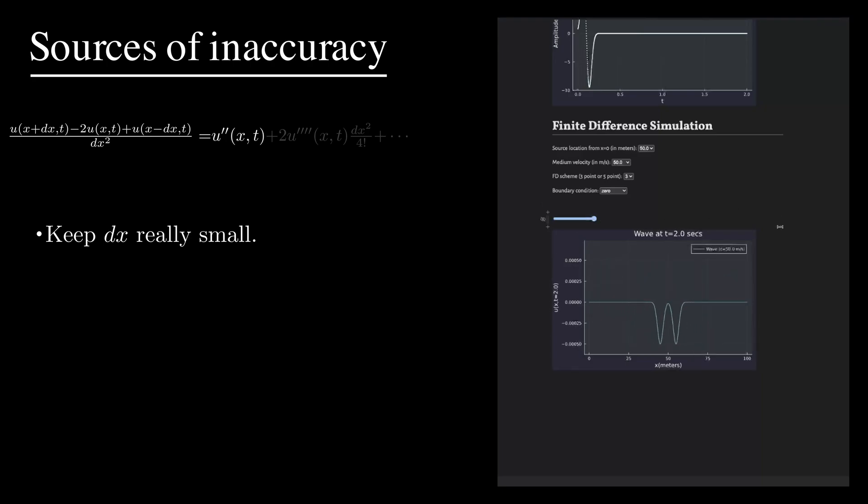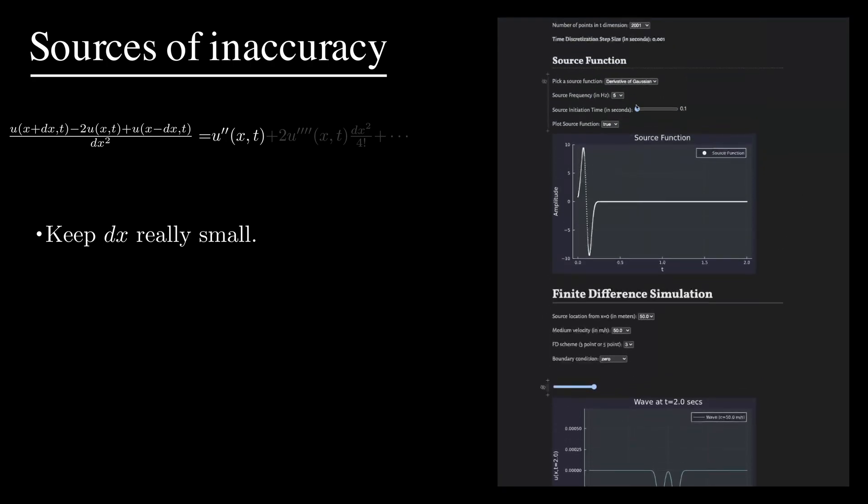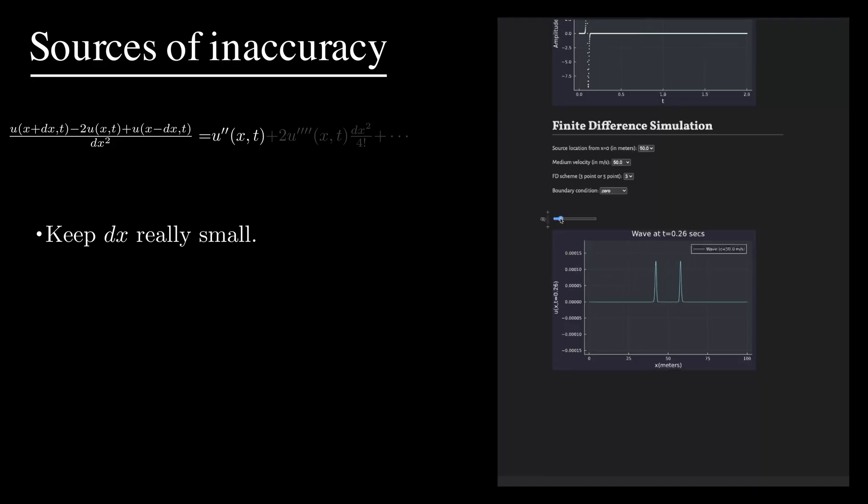While discussing source term, I made a big deal about source being impulsive. Let's do that by increasing the dominant frequency to 20. Now the resulting impulse was localized, but it again started disintegrating.